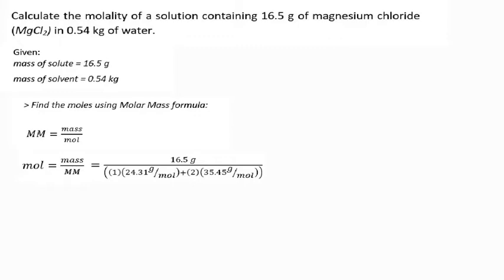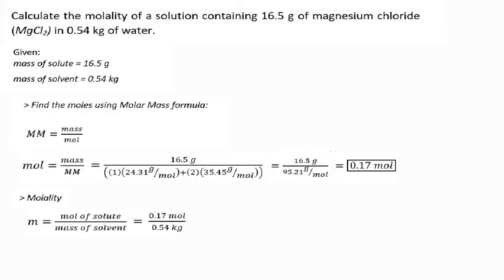The molar mass is calculated by adding the atomic weights of the constituent atoms: the atomic weight of magnesium is 24.31, plus the atomic weight of chlorine which is 35.45 multiplied by 2 since it has 2 atoms. The result is 0.17 mol. Since we have the value of moles, we can now calculate the molality: 0.17 mol divided by 0.54 kilograms equals 0.31 m. Therefore the molality of the solution is 0.31 m.